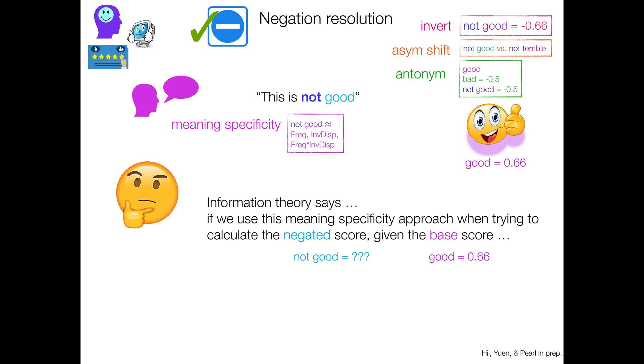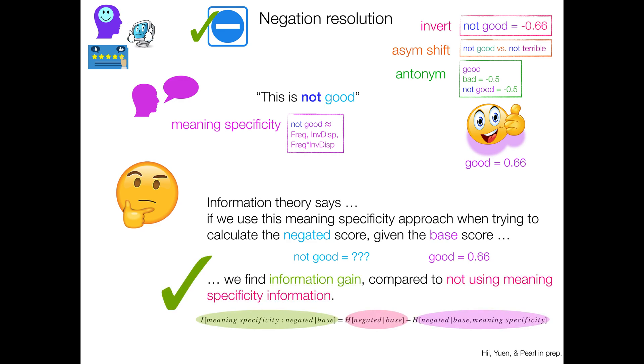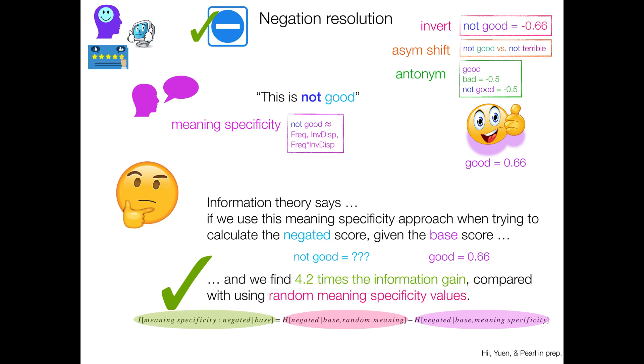We find information gain, that is a decrease in entropy compared to not using meaning specificity information at all, just using the base sentiment score. And we in fact find 4.2 times the information gain compared with using just random meaning specificity values. So like, in fact, calculating them correctly is probably a good idea, and get information gain from that. So information theory says, yes, this is not crazy.